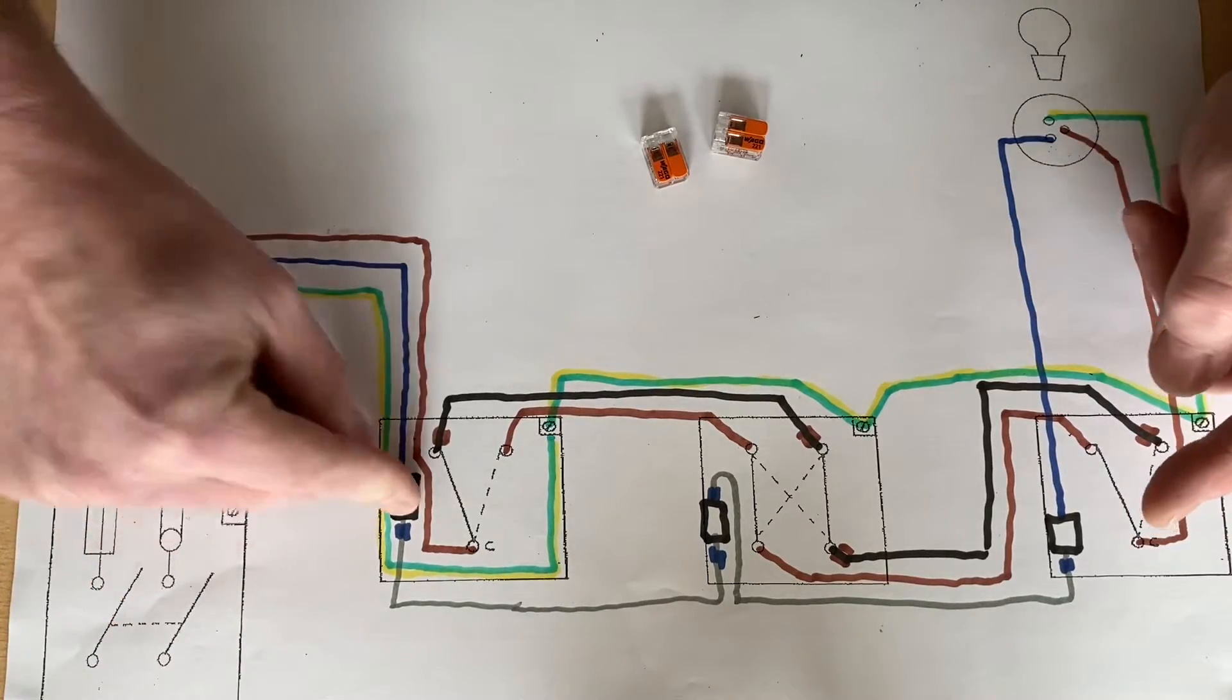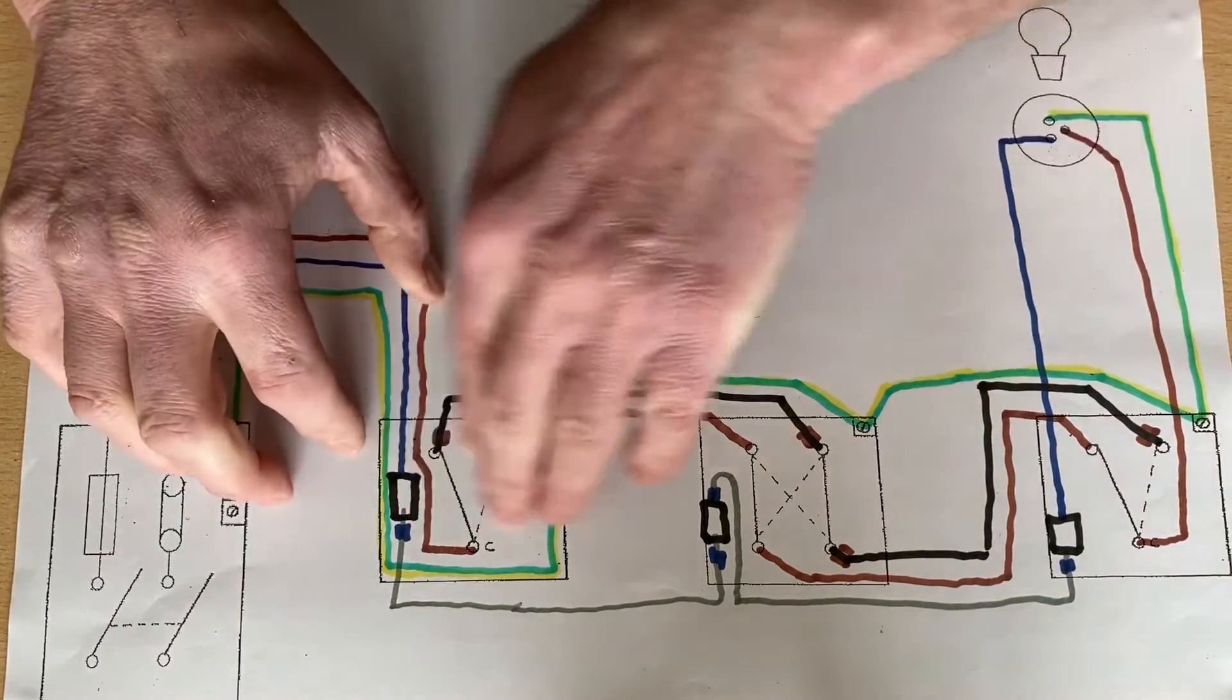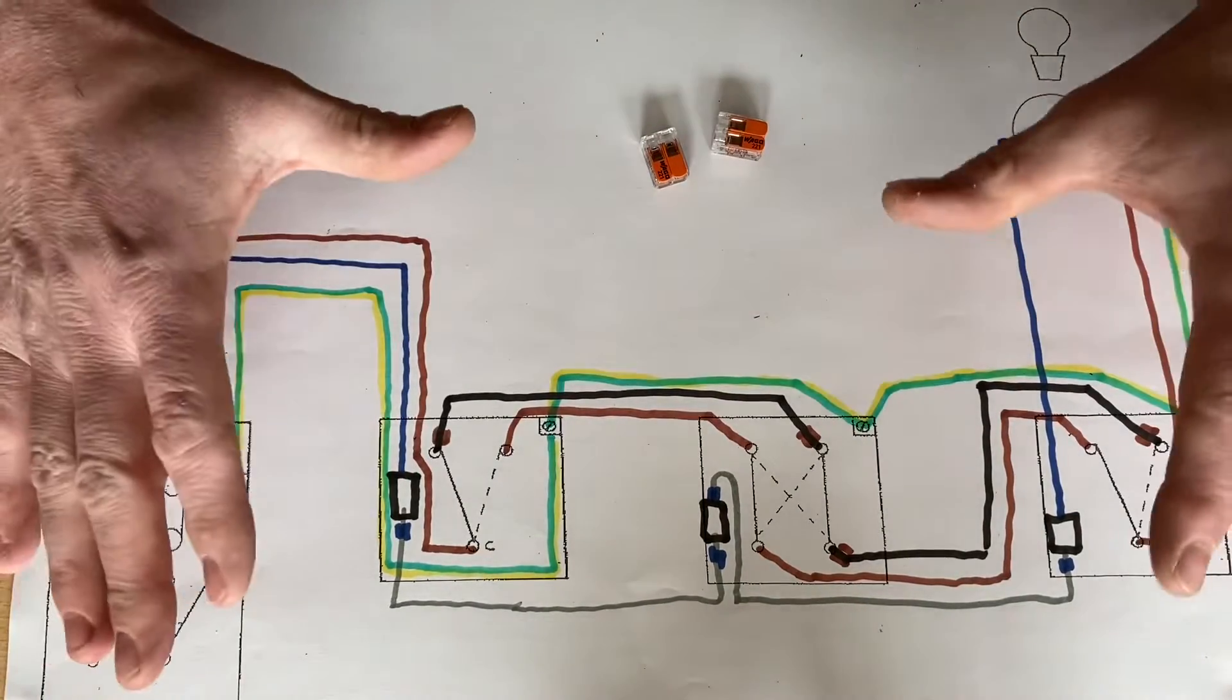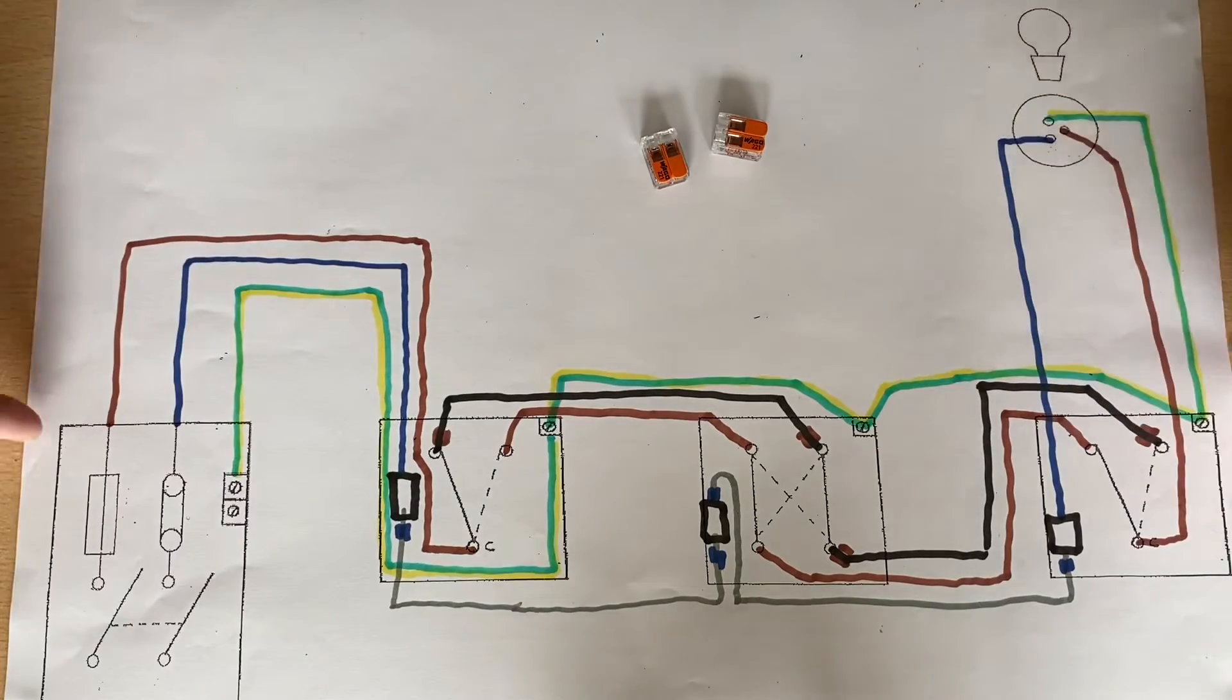But you would have taken the neutral directly up to the lighting point and just wired through like that. So that might help you put it into context of what sort of system this is similar to, taking the feed through the switch.